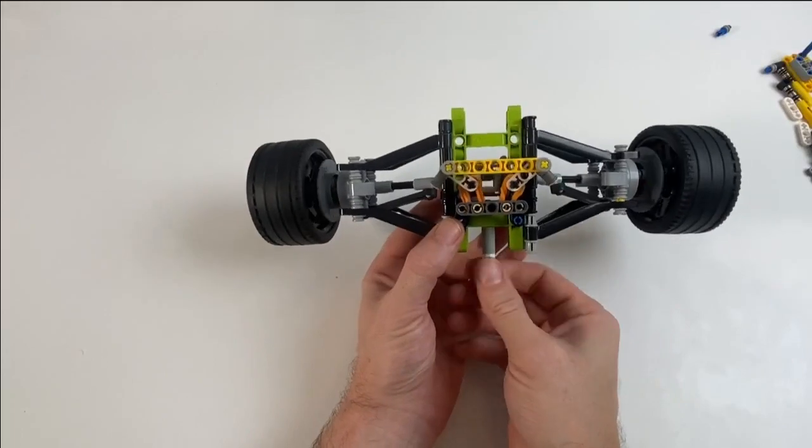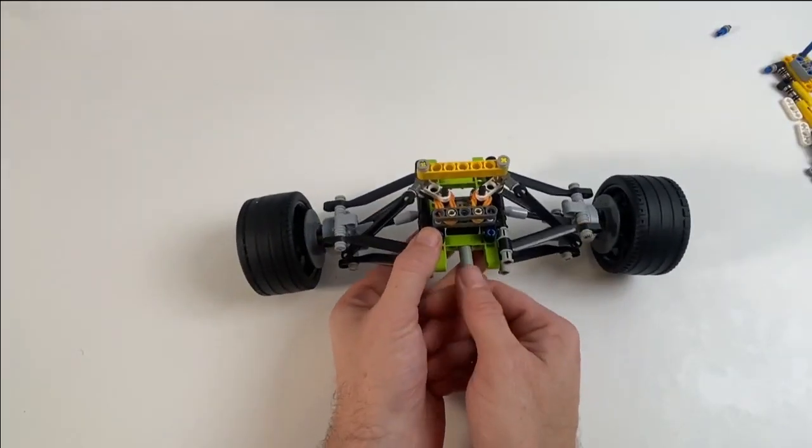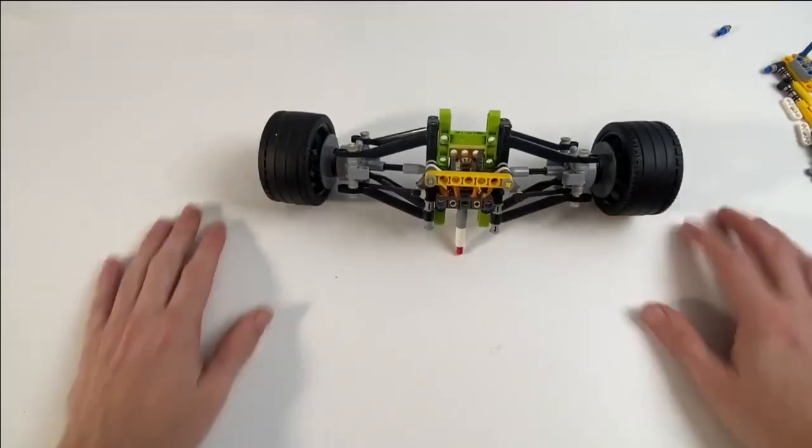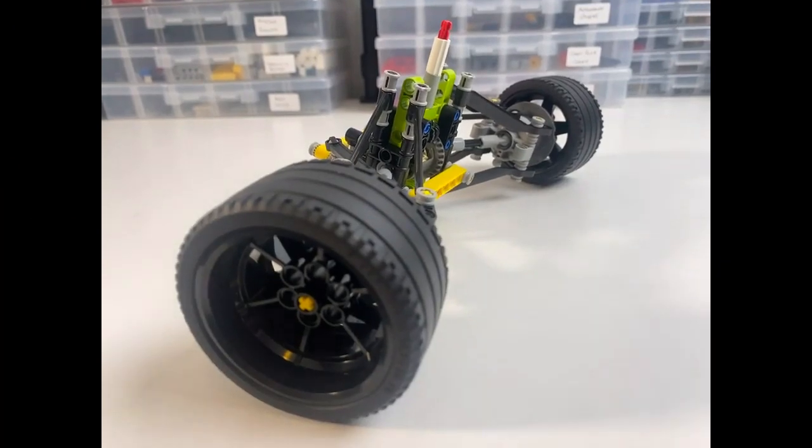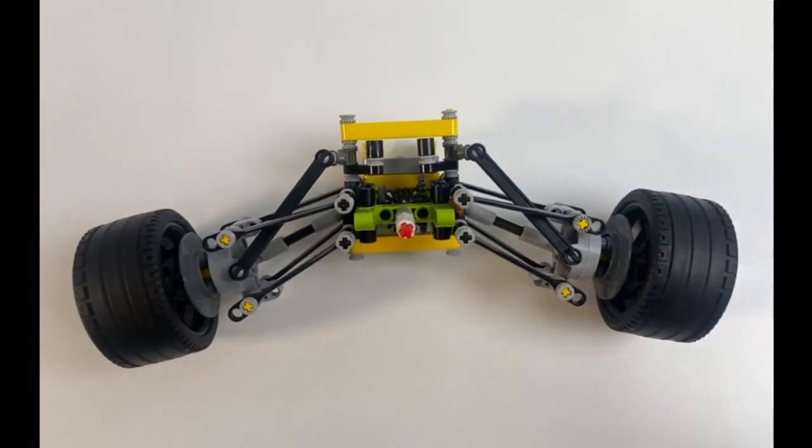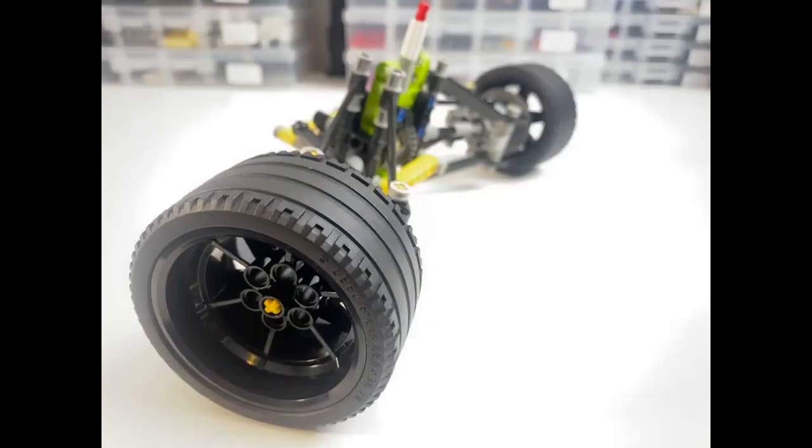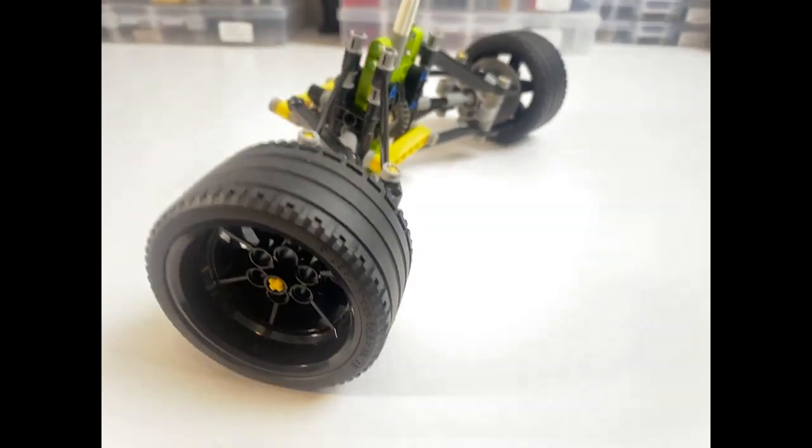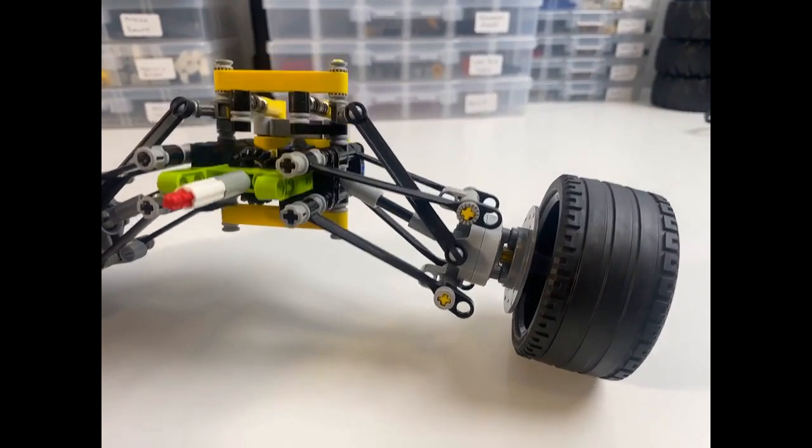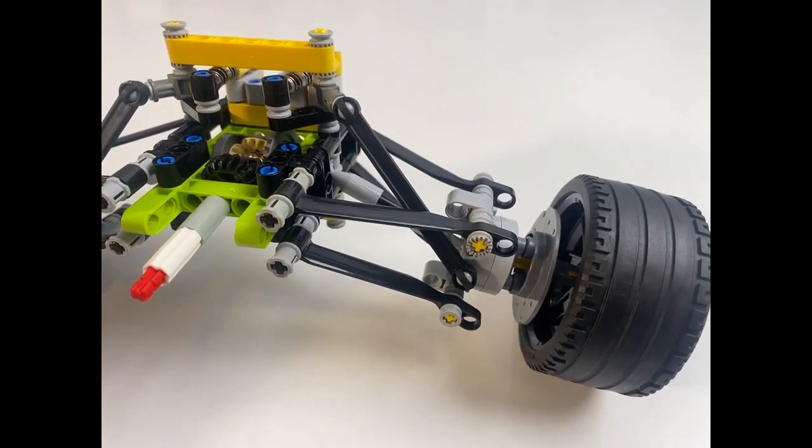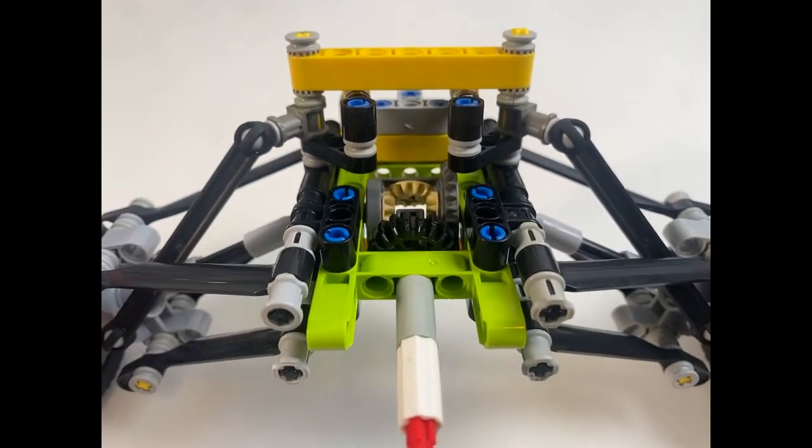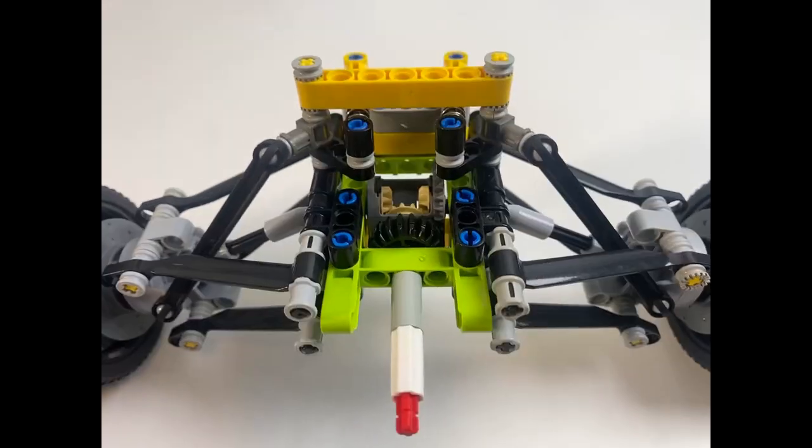So yeah, maybe try that with your build and swap it out and see how you get on. So there we go, that's how this is built and that's how you use it with either the shock absorbers or with elastic bands. Either way I think it's a really nice little bit of suspension. It's easy to make, doesn't use a huge amount of components so it's relatively cost-effective to build. And as I say, it's got the driveshaft there so that you can connect that to a chassis.